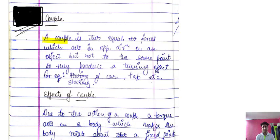The definition says: a couple is two equal forces which act in opposite directions on an object but not at the same point, so they produce a turning effect.